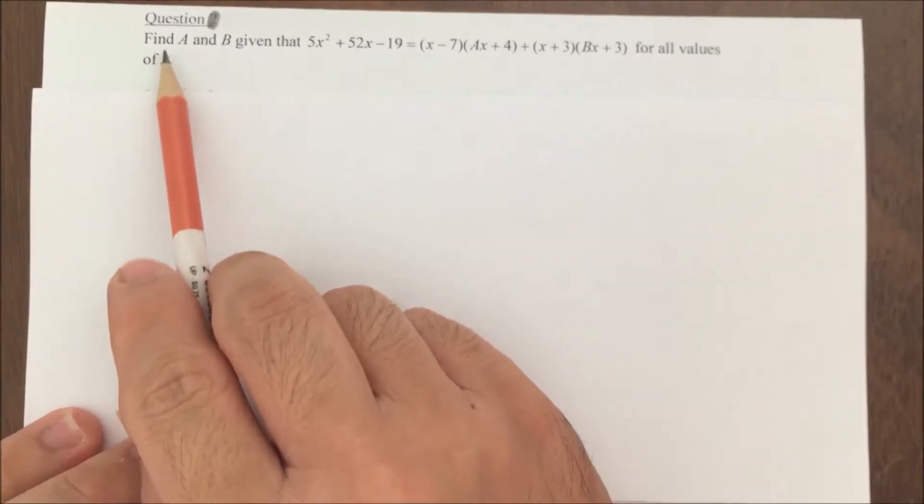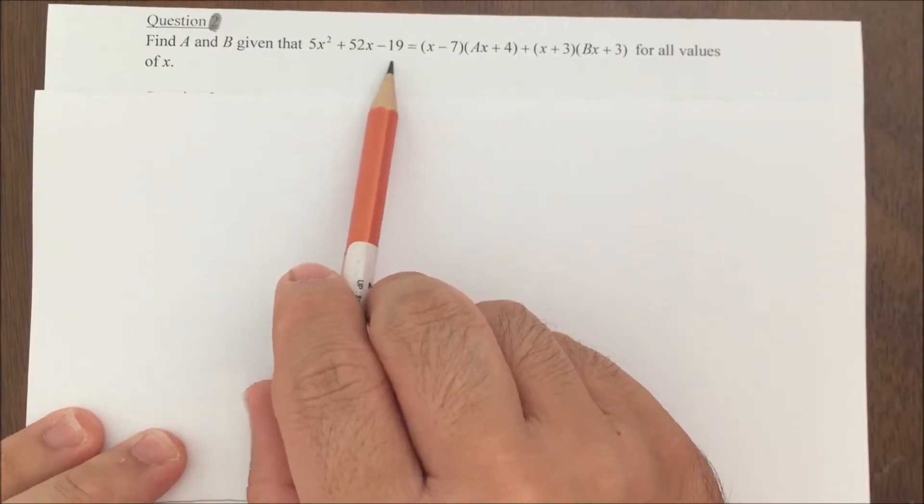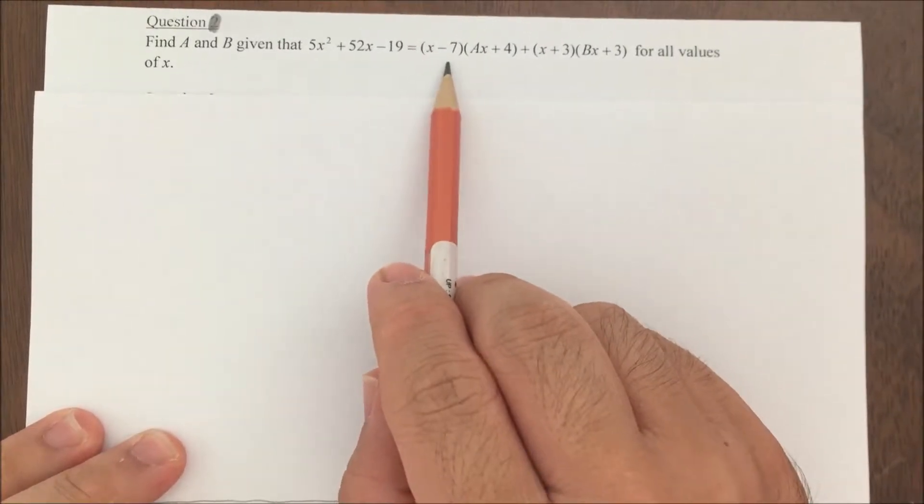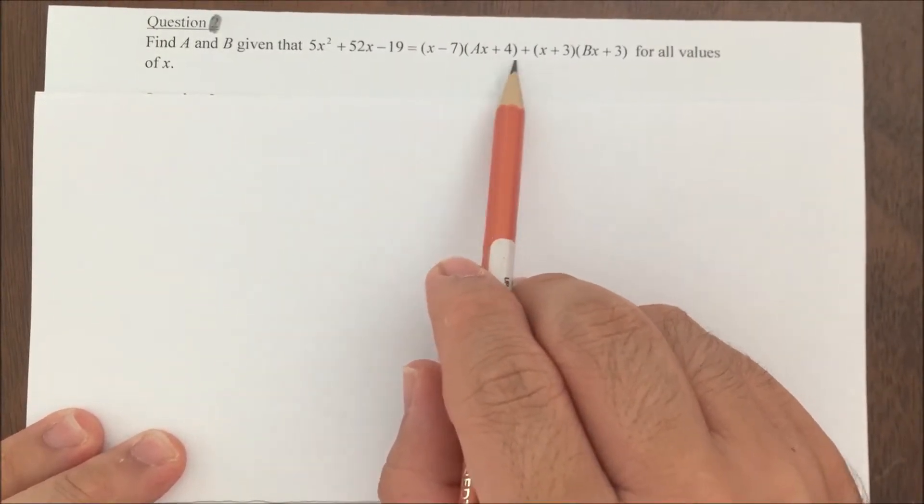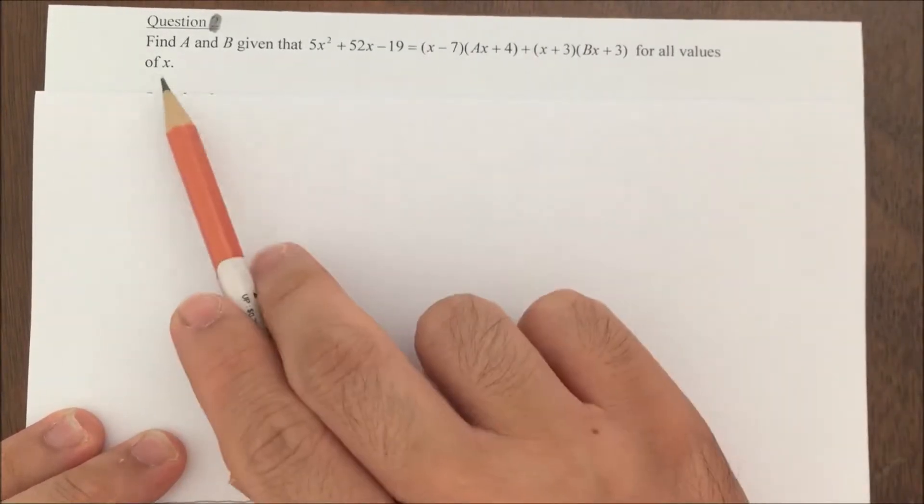Okay, for this question, we are supposed to find a and b given that 5x squared plus 52x minus 19 equals (x minus 7) multiplied by (ax plus 4) plus (x plus 3) multiplied by (bx plus 3) for all values of x.